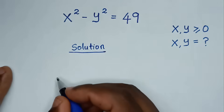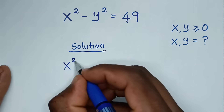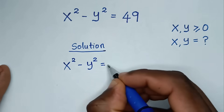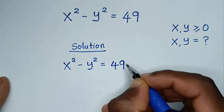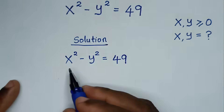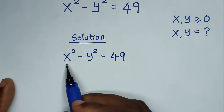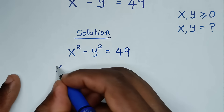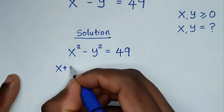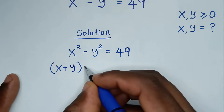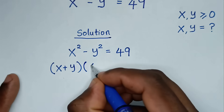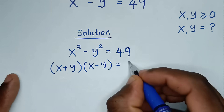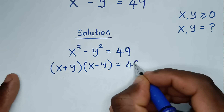For our problem, which is x squared minus y squared is equal to 49, here it is the difference of two squares. So x squared minus y squared is the same as (x + y)(x - y) is equal to 49.